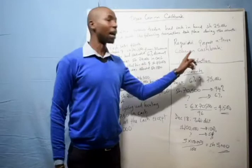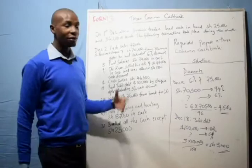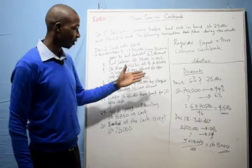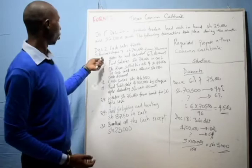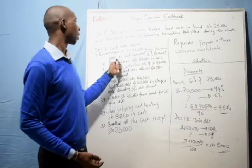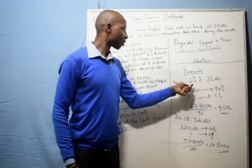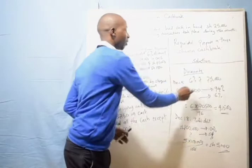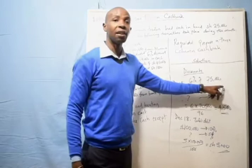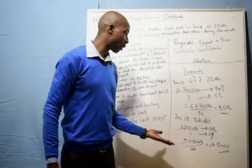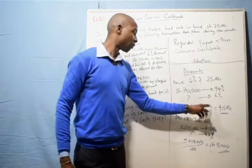Here is the solution. Where the discounts are in percentage, we are going to calculate those percentages. For example, on 5th we received 70,500 from Mwawura after deducting 6% discount. So 70,500 represents 94%, meaning the original amount was 75,000. We are going to calculate what is represented by 6%: 6 times 70,500 divided by 96, which gives us 4,500.